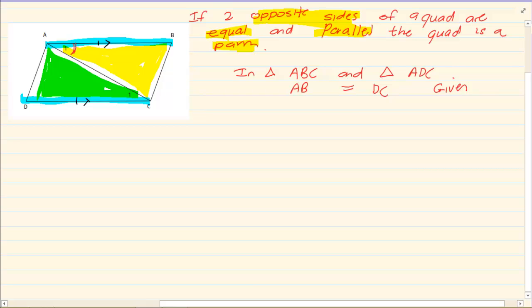Now if you look at A1 and C1, they are also equal. A1 is equal to C1. Why? Because AB is parallel to DC, so this is making alternate angles. Can you see the Z?